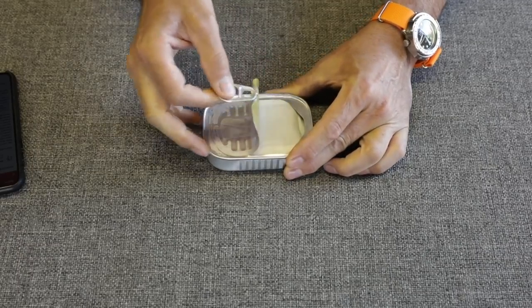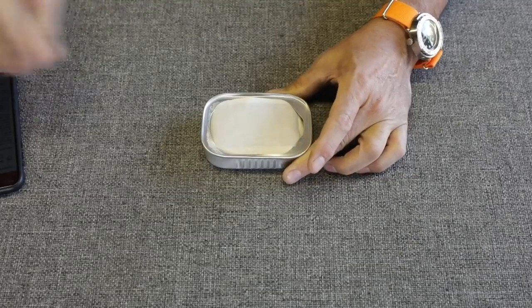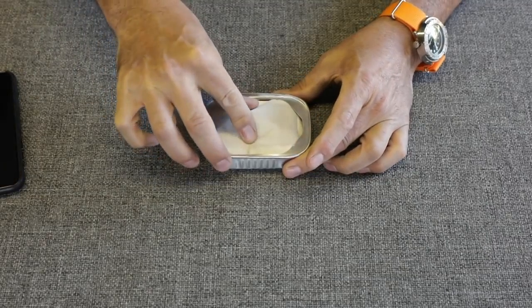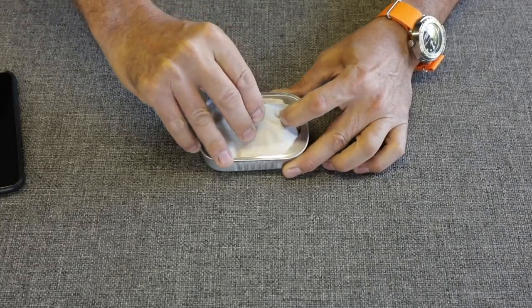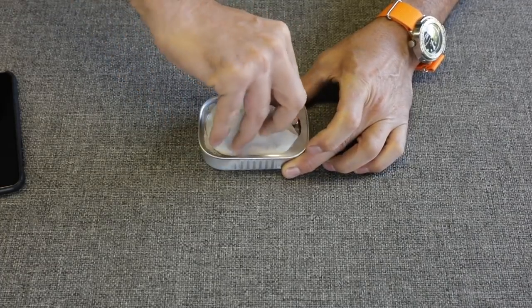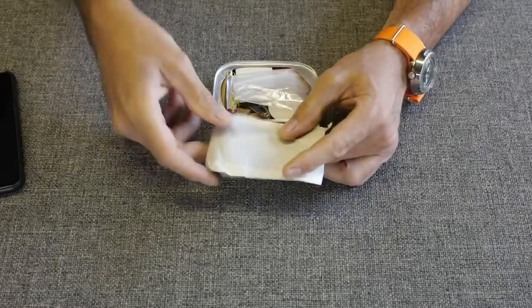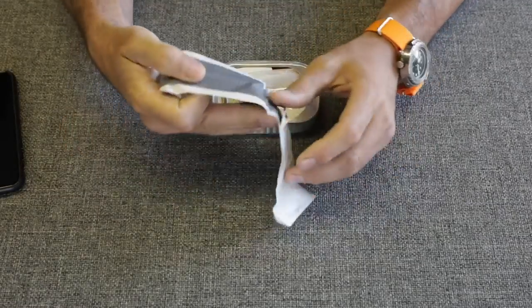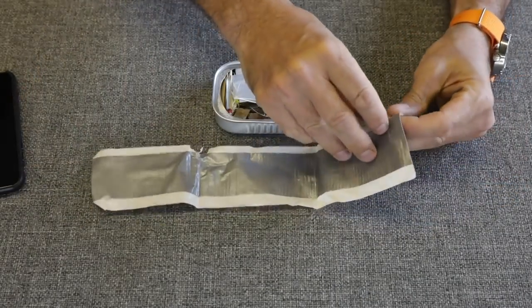It's sealed, which is nice. It's going to be all waterproof, so maybe it is a viable option here. Let's start at the top and find out what is inside. It is packed tight, I'll give them that. First things first, we have duct tape, a pretty good amount of it, probably about 12 inches.